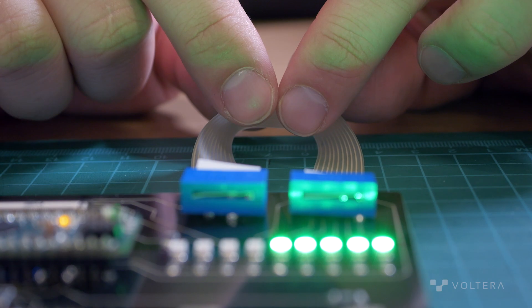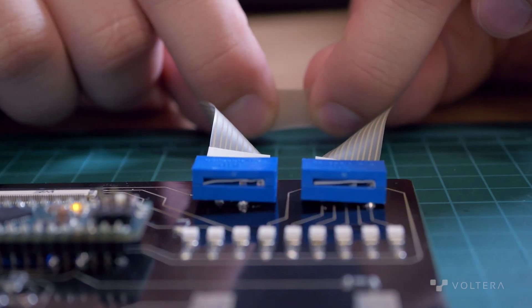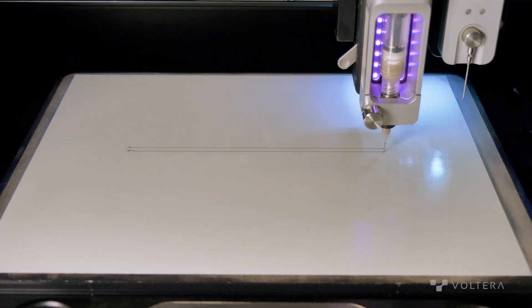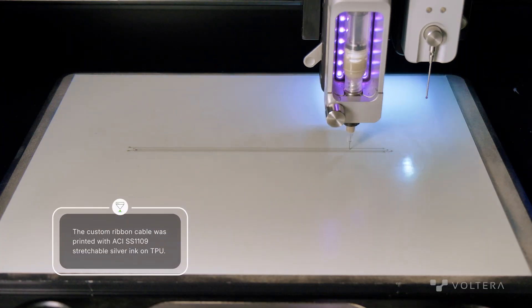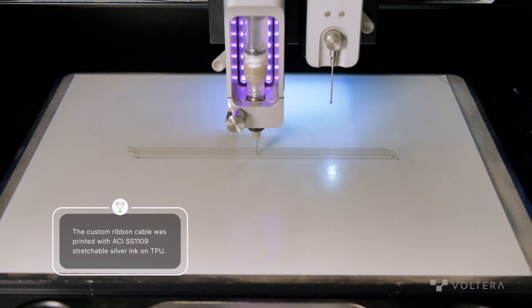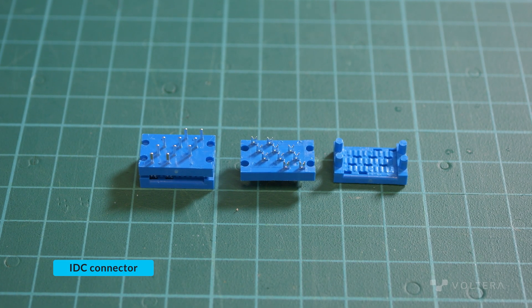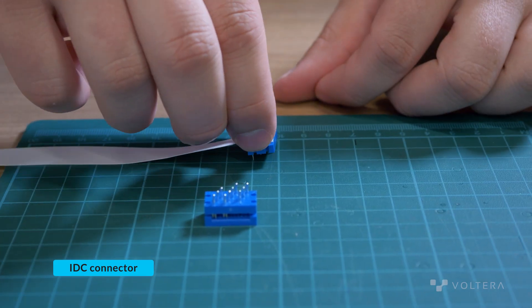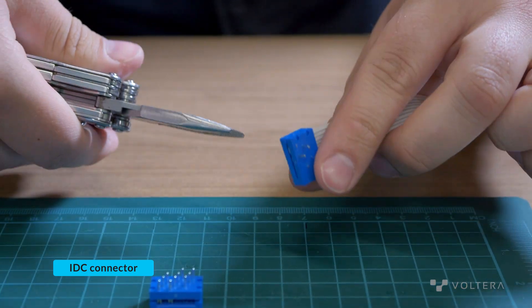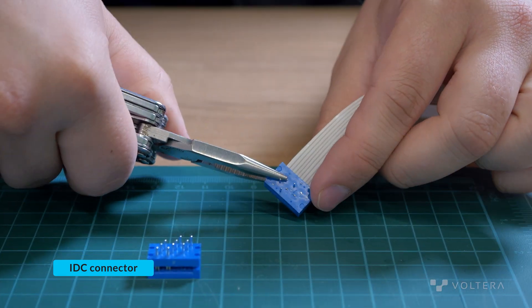Next we've printed a custom ribbon cable on TPU, our first stretchable substrate connection. For this we're going to use the insulation displacement connector, which is often used for cutting through wires, but in this case we're using it to poke through the substrate to create an electrical contact.